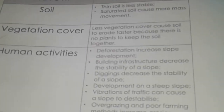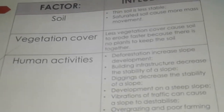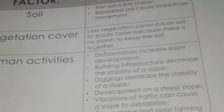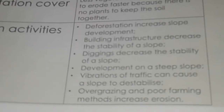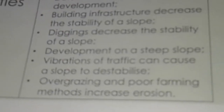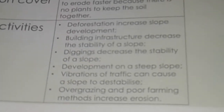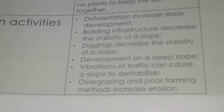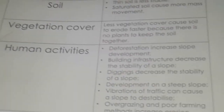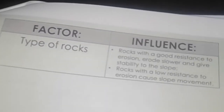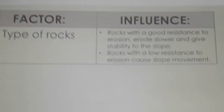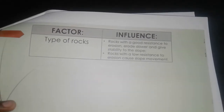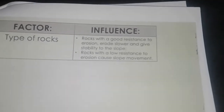Human factors include deforestation — removing trees increases slope development due to increased erosion. Building infrastructure decreases the stability of a slope. Development on steep slopes destabilizes them, and vibrations from traffic can also cause instability. Overgrazing and poor farming methods increase erosion. Regarding rock type, rocks with good resistance to erosion erode slower, maintaining slope stability, while rocks with low resistance cause more slope movement and development.